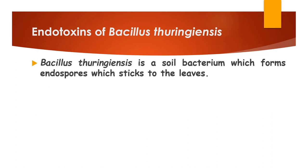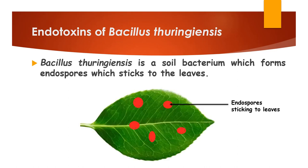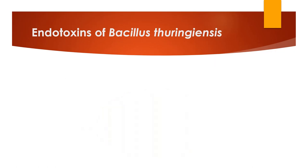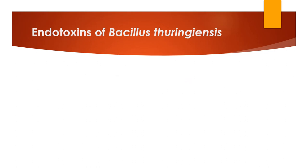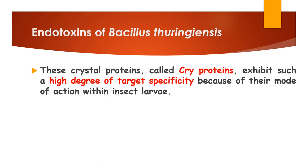Bacillus thuringiensis is a soil bacterium and it forms endospores that stick to the leaves. These endospores contain intracellular crystalline bodies that carry an insecticidal protein. These crystal proteins are called cry proteins, which exhibit a high degree of target specificity and their mode of action takes place within the insect larva.